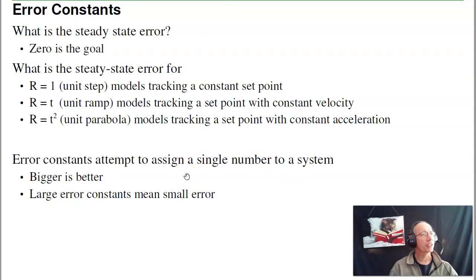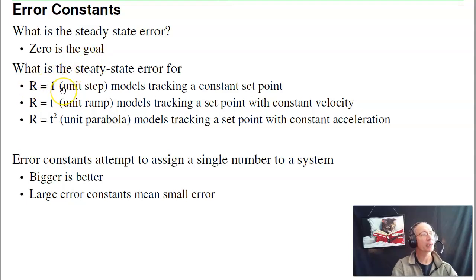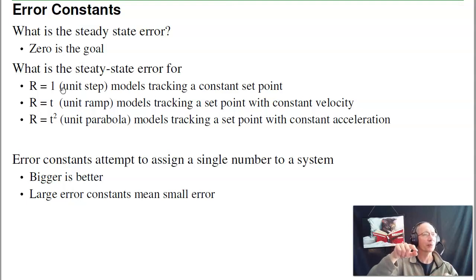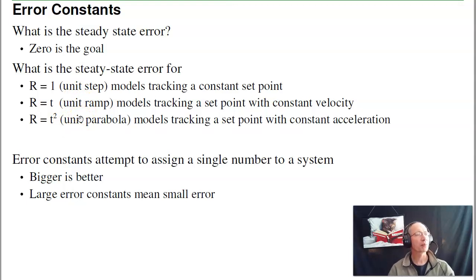Now error constants, the topic of this lecture, is about describing the behavior of the system in steady state with just a single number. The goal is to have no error, and you have to specify no error with respect to what kind of input. There are three standard ones: a constant input (like setting temperature to 72 degrees), a ramp input (like slowly ramping up a reflow oven), or a parabolic input. In general, bigger is better for error constants — large error constants mean small steady-state error, and ideally the steady-state error is zero.